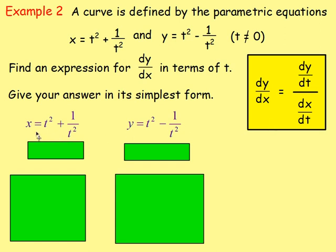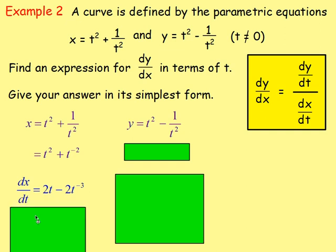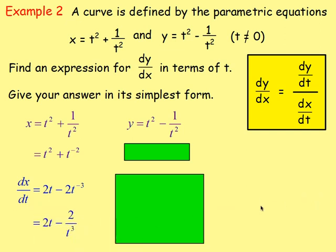Differentiating x: x equals t squared plus 1 over t squared. Before differentiating, rewrite 1 over t squared as t to the minus 2. From there you can differentiate x with respect to t: dx/dt equals — bring the power down, take one off — 2t minus 2t to the power of negative 3. Rewriting with positive indices gives 2t minus 2 over t cubed.